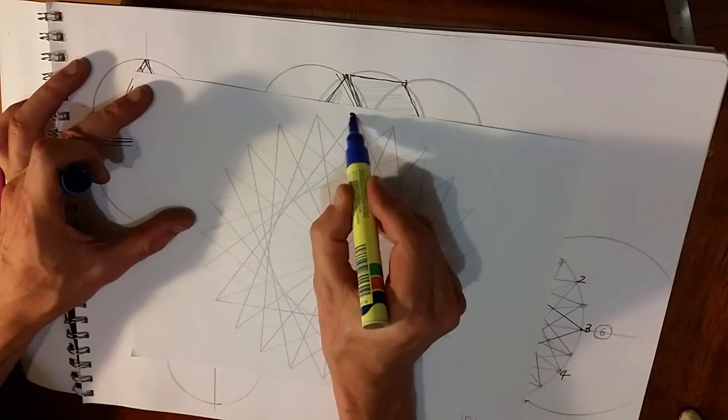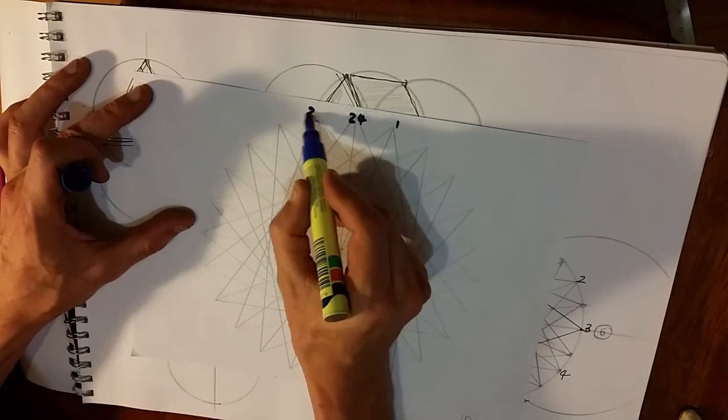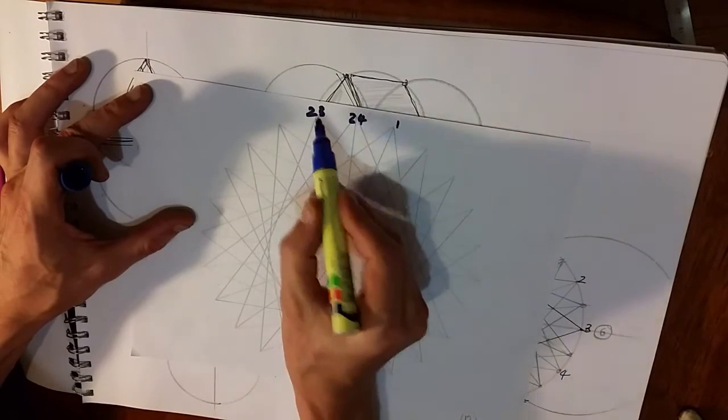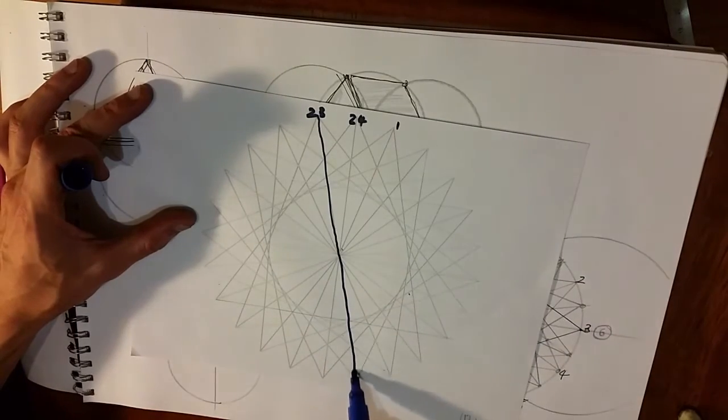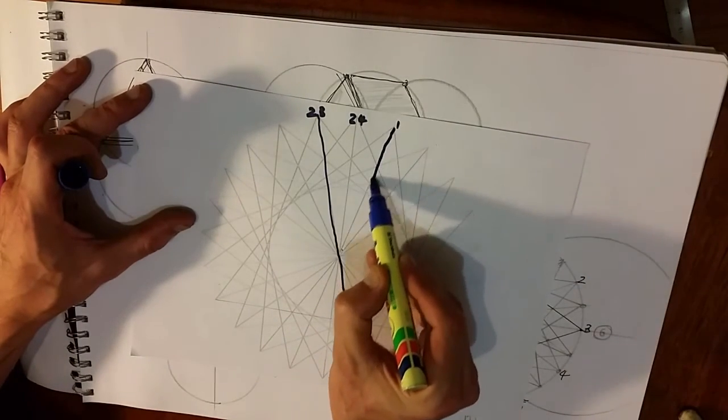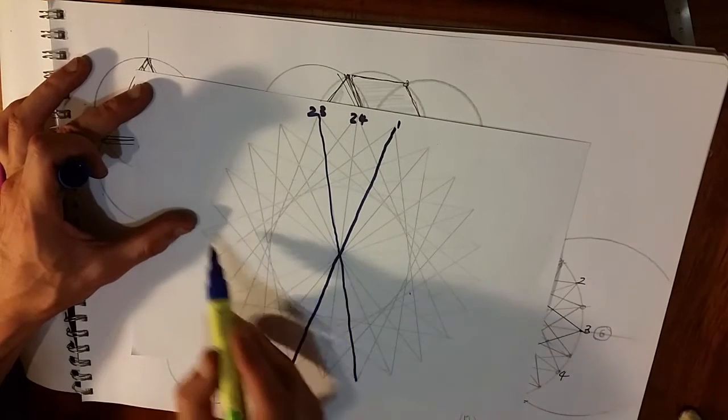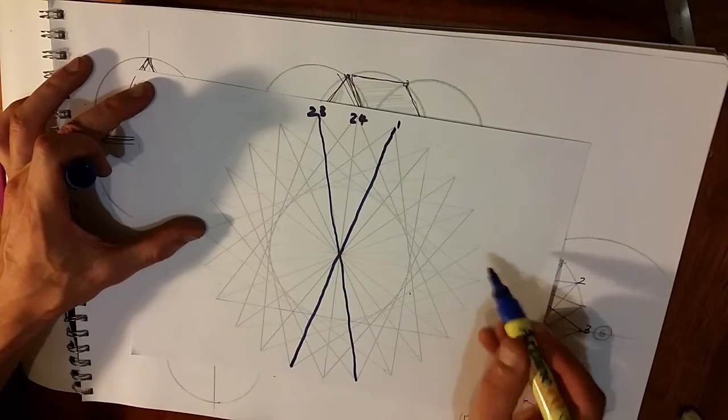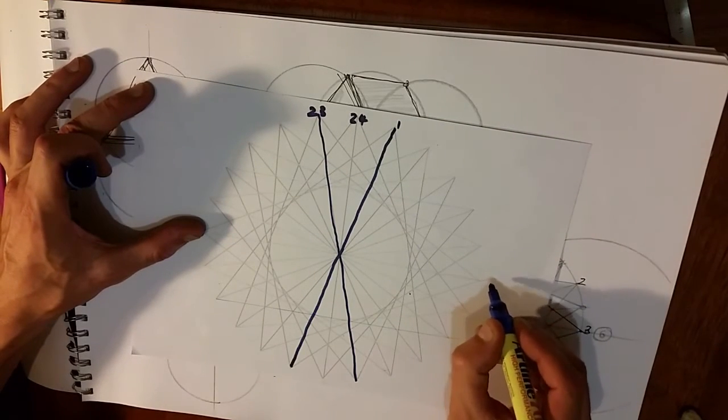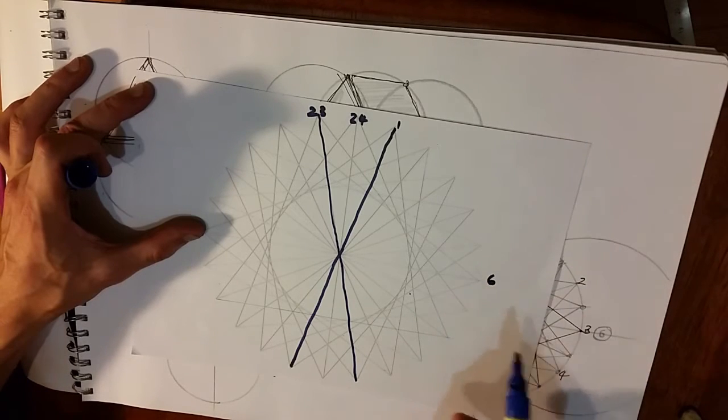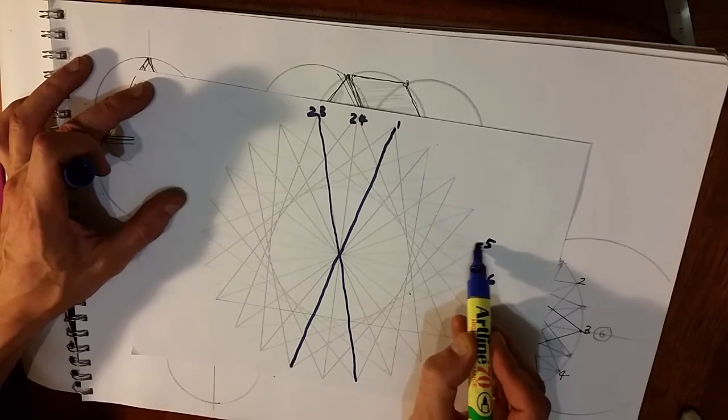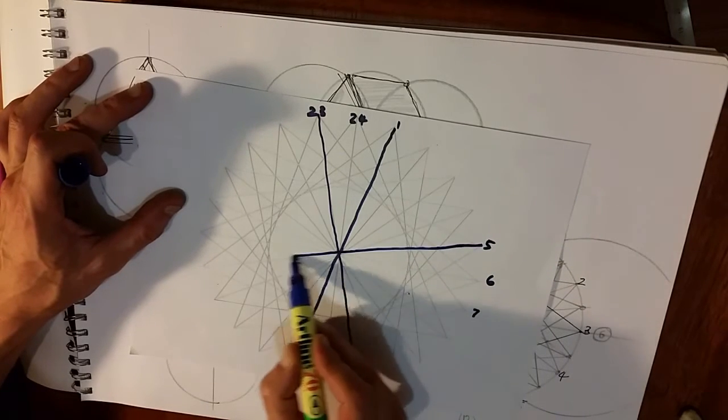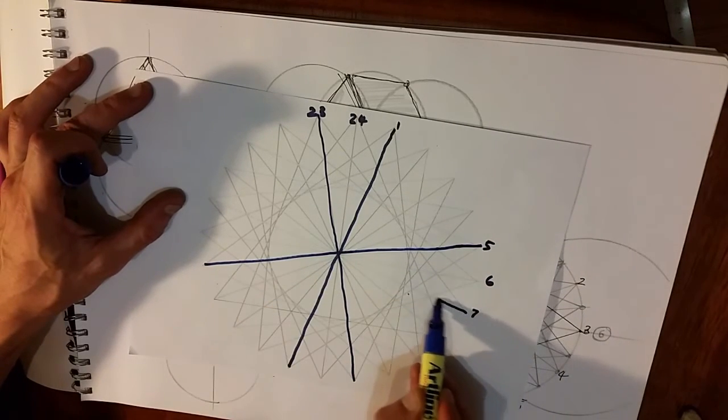We would have 24, 1 and 23. So from 23 through the center, from 1 through the center. Then on the horizontal you would have 6 and so 5 and 7. So 5 through and 7 through the center.